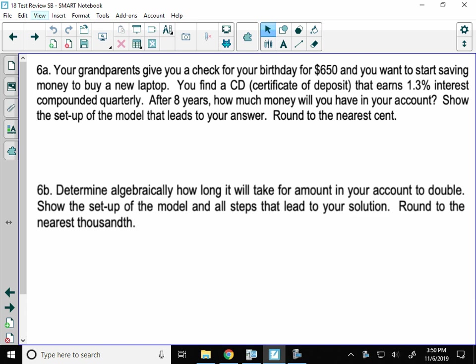You find a CD, which is a type of banking account called a certificate of deposit, and it earns 1.3% interest compounded quarterly. After 8 years, how much money will you have?